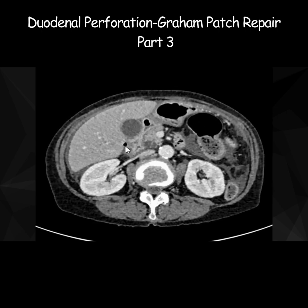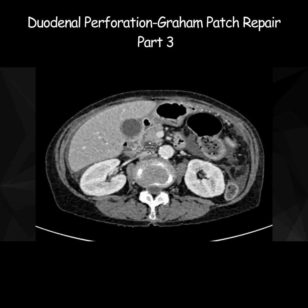Here you can see some free gas outside the duodenal lumen. Look at this area of the duodenum just adjacent to this gas loculus. This is the mucosal lining of the duodenum, and just in this area you can see a defect in the mucosal lining of D2. That's where the perforation has occurred, and just next to it is some free gas.